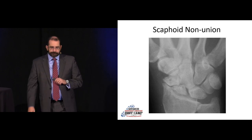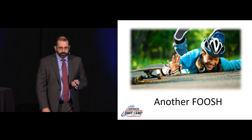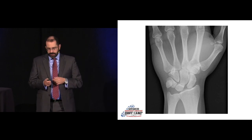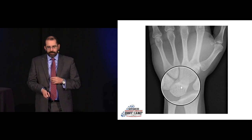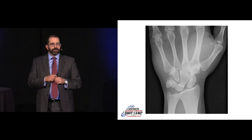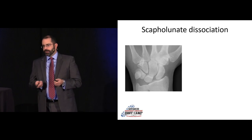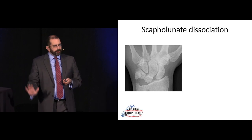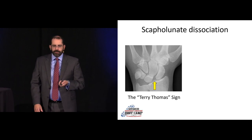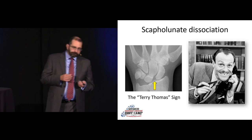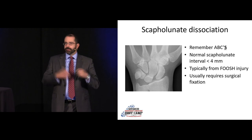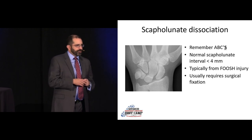Here's another FOOSH with wrist pain. The AP film looks pretty good, but when we look at alignment and spacing, something seems off. The articulation between the lunate and the scaphoid is much wider than the other intercarpal distances — like two to three times the size. This is known as scapholunate dissociation, classically occurring with a FOOSH mechanism. It's a disruption of the scapholunate ligament, called the Terry Thomas sign or Dave Letterman sign, for the gap between their teeth.